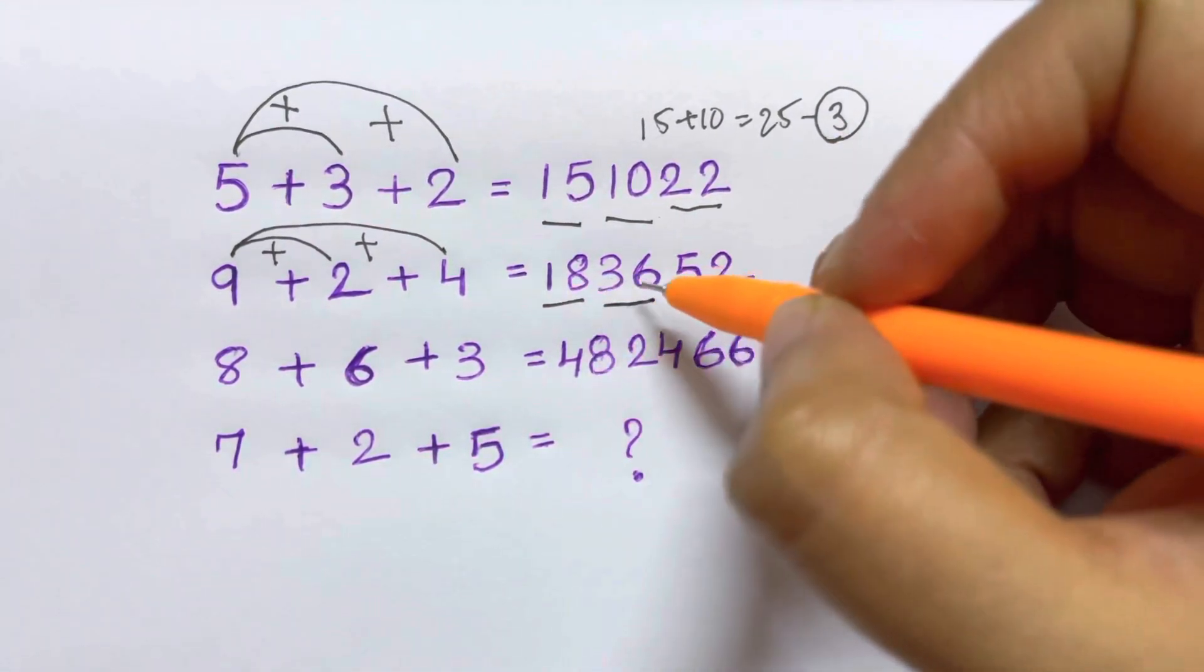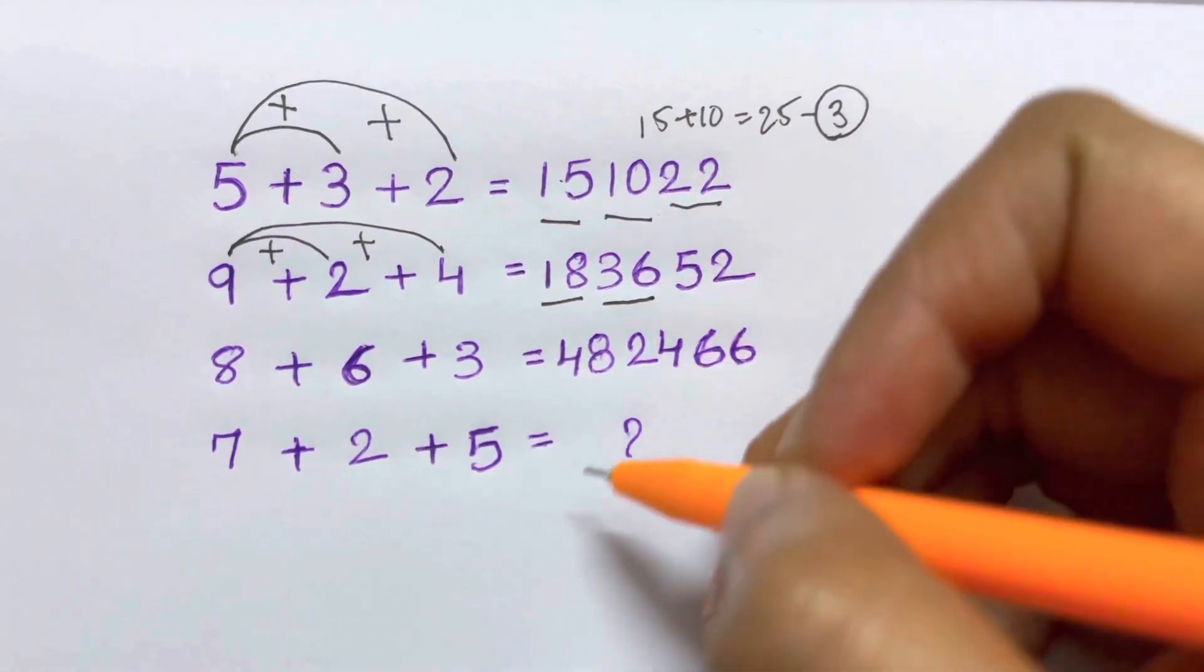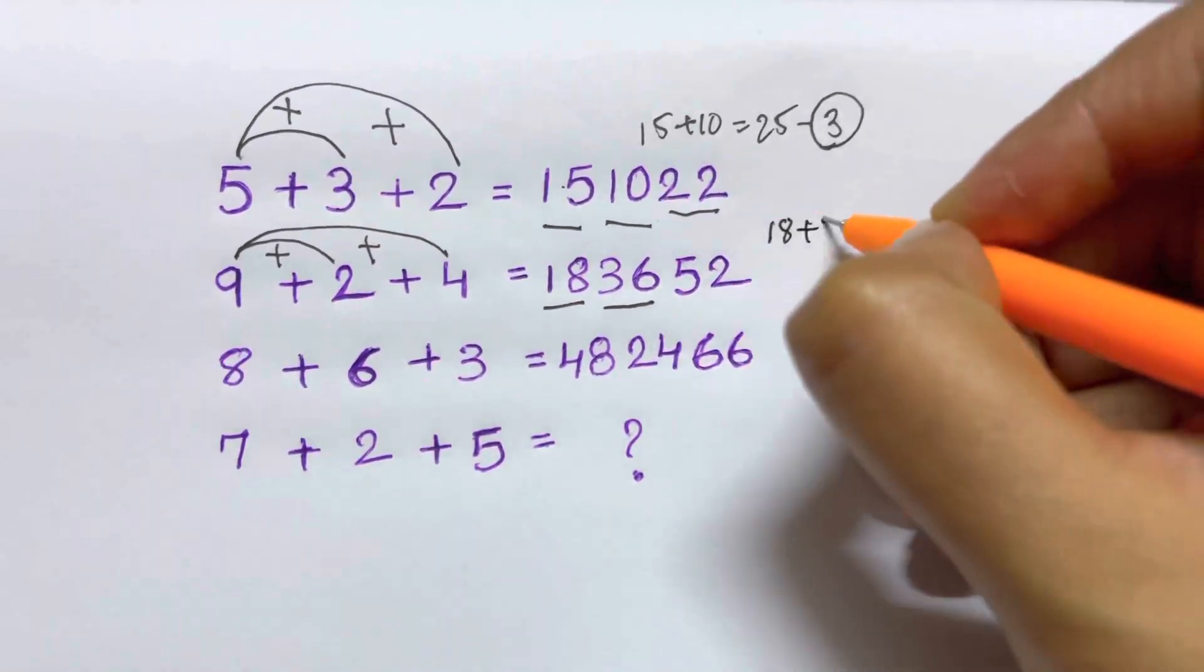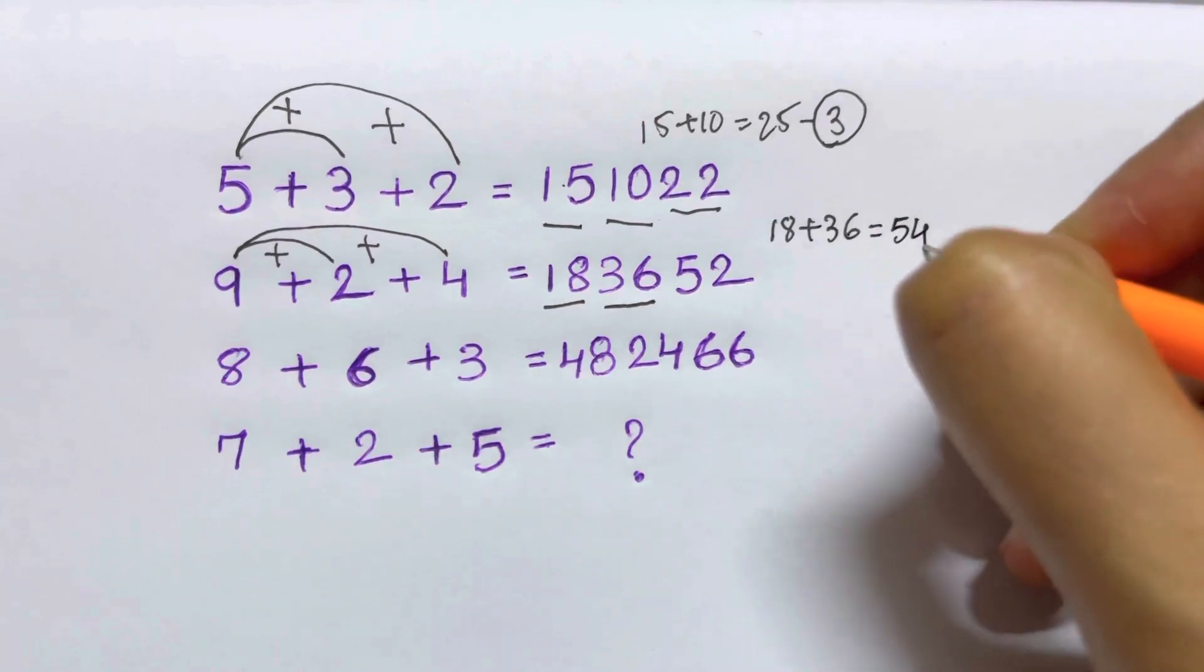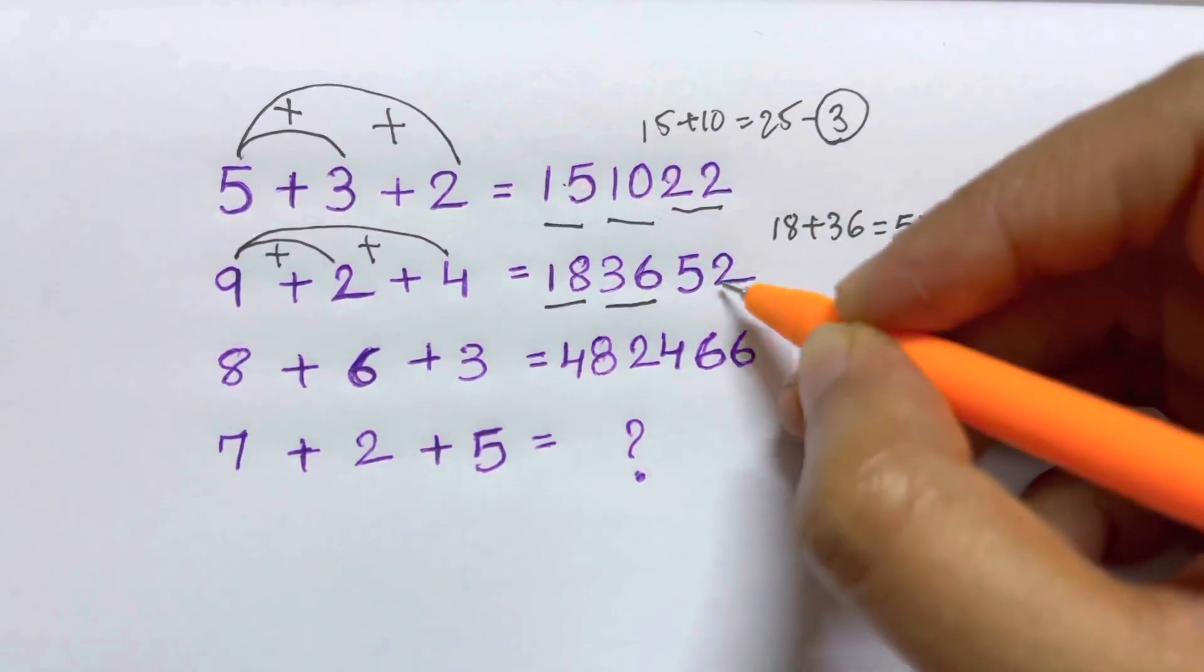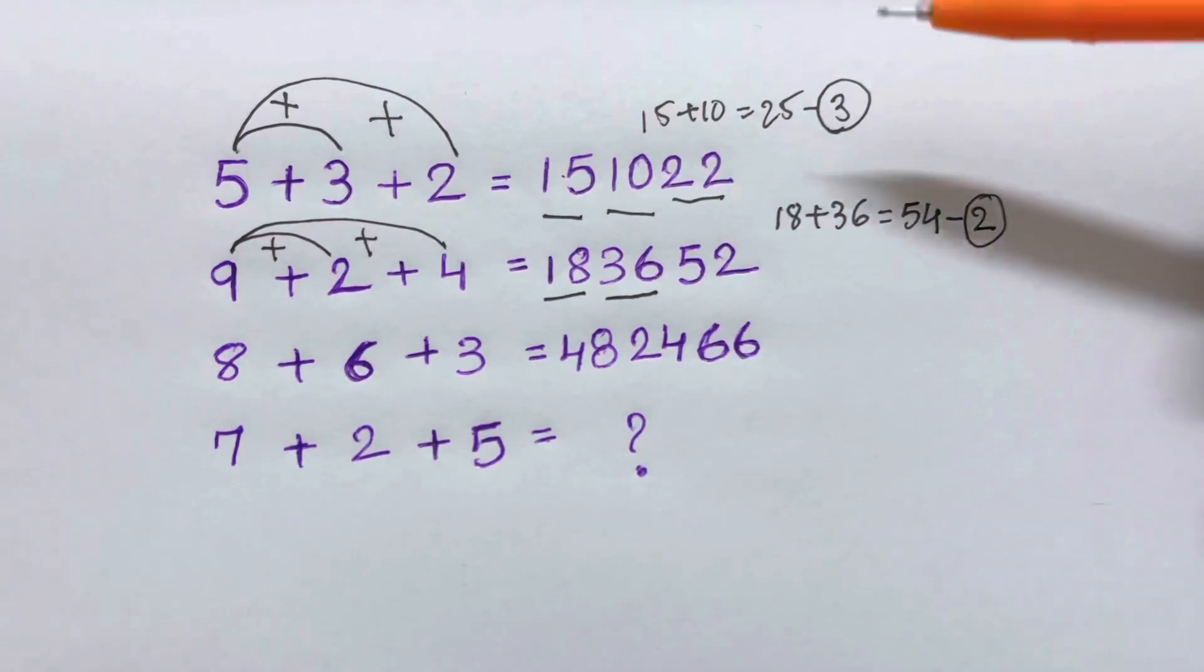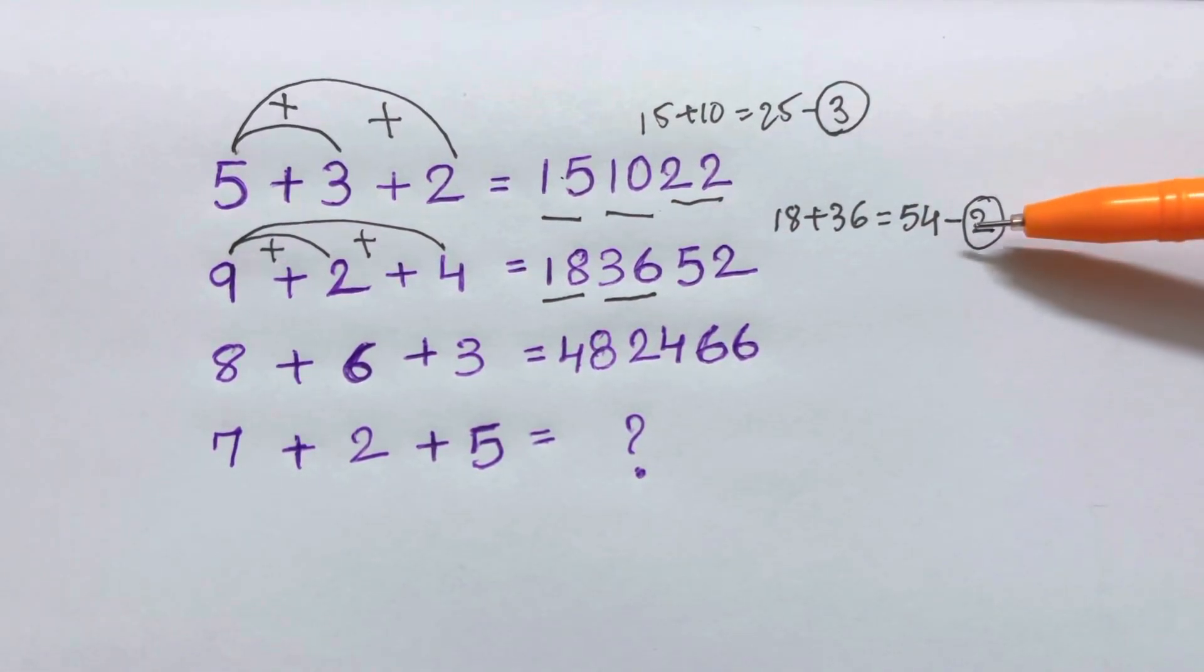And now how should I get 52? So let me—I have added 15+10 here, so let me try and add 18+36. So 18+36 is just going to give me 54, and now how should I make it equal to 52? So I'll just subtract it with 2, so that will give me 52. So now guys, you might have got it in mind what we are going to do.